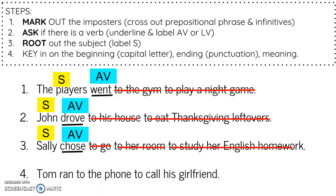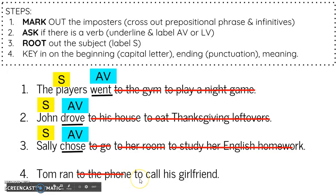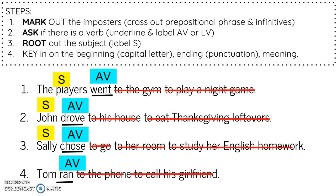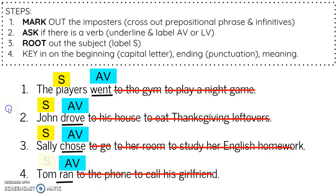"Tom ran to the phone to call his girlfriend." The first "to" is followed by "the" — that's not a verb, so I'm looking for a noun: to the phone. Phone is a noun, so that's a prepositional phrase. The next "to" is followed by "call" — call is an action verb, so "to call his girlfriend" is an infinitive phrase. Now I'm left with "Tom ran." Ran sounds like a verb — I can see the action of someone running, so it's an action verb. Who ran? Tom. That's my subject.